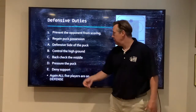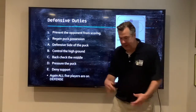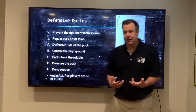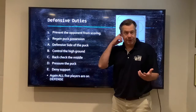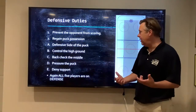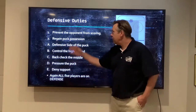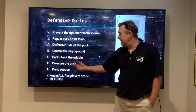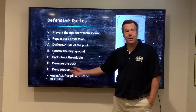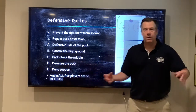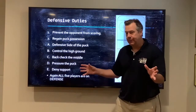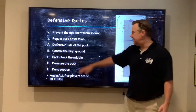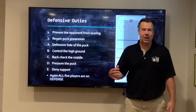If you have one player pressuring and the others taking away passing options, the puck carrier is under pressure, has to get their head down, and if they have nowhere to pass, they'll make a bad pass right to us or lose the puck. All five skaters are playing defense — either pressuring the puck carrier or denying support. Young players often send three players to the puck, and one little pass beats all three, creating an odd-man rush — that's how you get scored on.